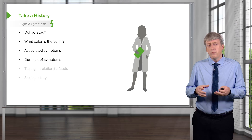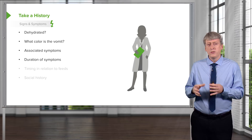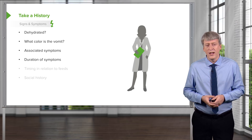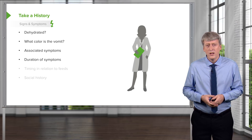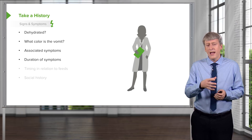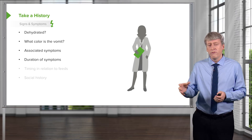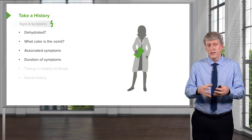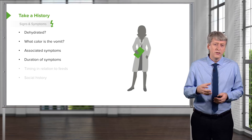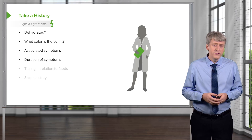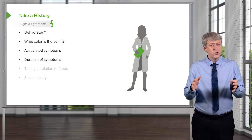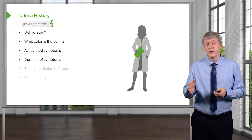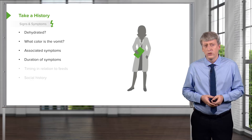It's important to ask about the duration of symptoms, as we'll discuss chronic versus acute episodes of gastroenteritis. Understanding how long this has been going on may give you clues as to the etiology. Typically, viral illness is reasonably short — only a few days — while other illnesses can last much longer.